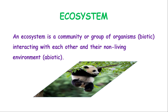To define ecosystem: an ecosystem is a community or group of organisms, which are referred to as biotic, interacting with each other and their non-living environment, which is referred to as abiotic. The word biotic refers to living and the word abiotic refers to non-living. To make up an ecosystem, the living aspects interact with each other and also with the non-living part, which is the abiotic.